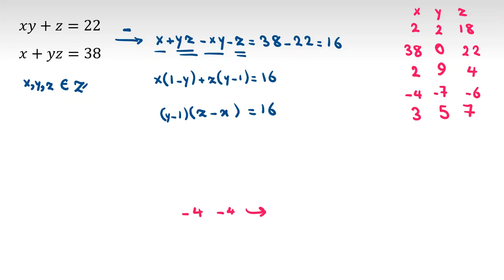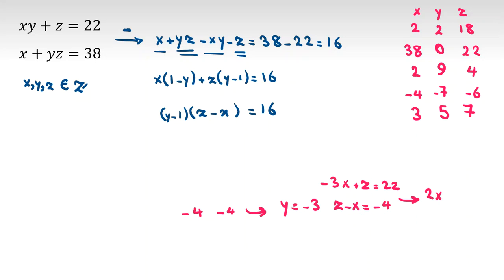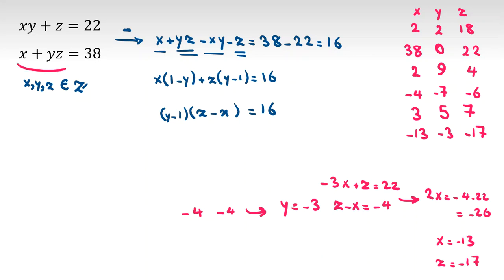Last case (-4, -4): y minus 1 = -4, so y = -3, z minus x = -4. Replacing y = -3: -3x + z = 22. Second minus first gives 2x = -26, so x = -13. Then z = x minus 4 = -17. Checking: x·y + z = 39 minus 17 = 22 ✓, x + y·z = -13 + 51 = 38 ✓. Valid: (-13, -3, -17). In total we found 6 answers.